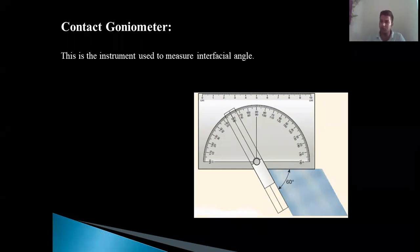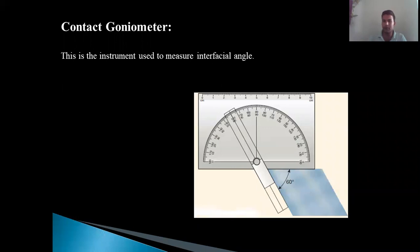You can measure an obtuse angle, an acute angle, or an angle which is perpendicular or 90 degrees using the contact goniometer. It is a very fundamental instrument by which an interfacial angle can be measured for any crystal.